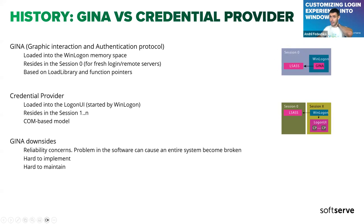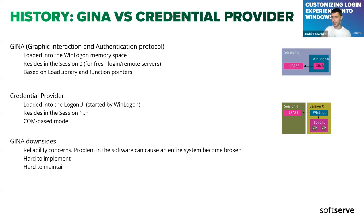This architecture has a few downsides. First, Winlogon is a very sensitive process. If your GINA crashes or works inappropriately, your system might become broken entirely — if you implemented something bad in the GINA and it crashed on load, you won't be able to log into the system at all. Also, it resides in session zero, which is mostly for services and is also pretty sensitive. The GINA implementation is based on function pointers and load library technique — you have to load a specific library, get function pointers, implement all of those, and manage memory. It's not very convenient.